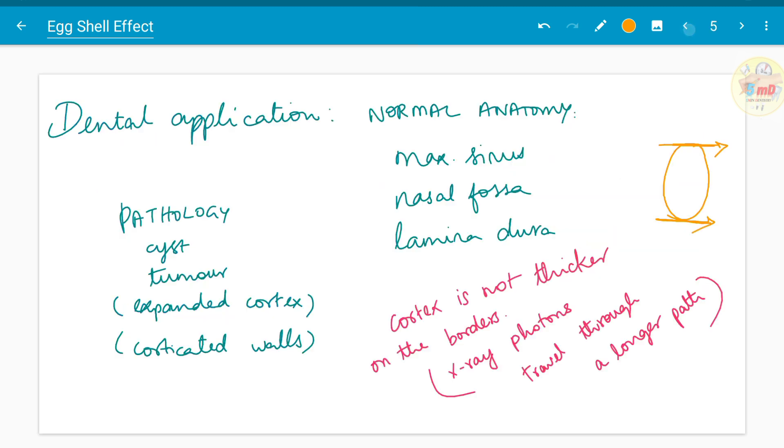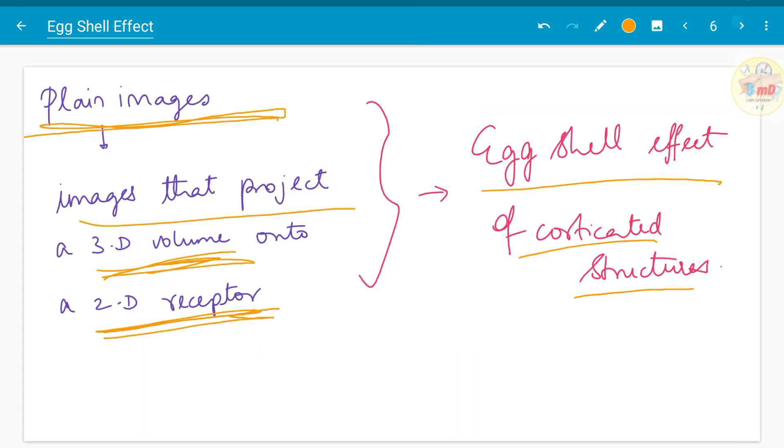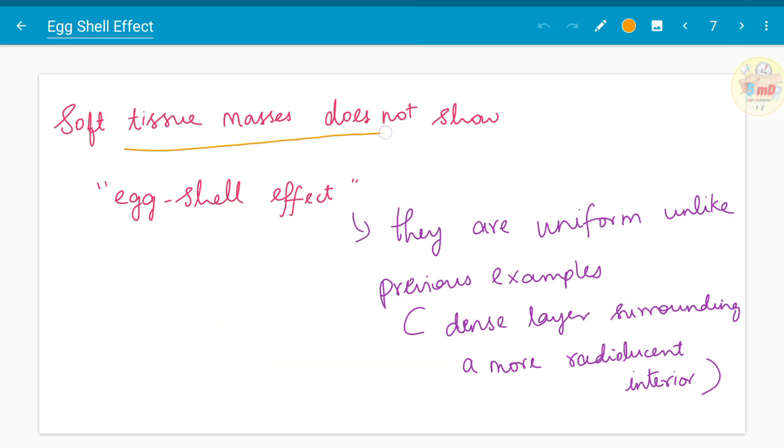You should also know that the cortex is not thicker on the borders and x-ray photons travel through a longer path. Therefore the borders appear more thicker in the radiographs, but soft tissue masses do not show eggshell effect.